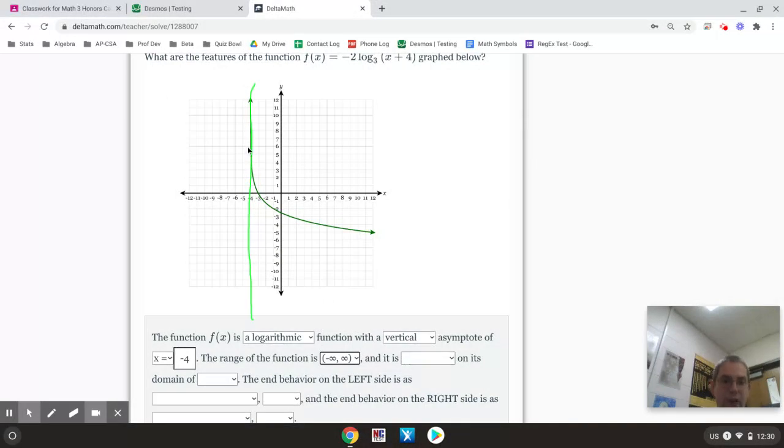And now this function, the next thing is it's going to want to know if it's increasing or decreasing. So, in this case, the function is decreasing because as I trace it from left to right, it goes down the whole time. So, it is decreasing on its domain of,